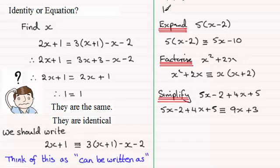So what we've got here are examples of identities. And you should be encouraged then to use this symbol here, the three lines.